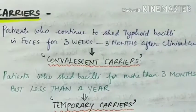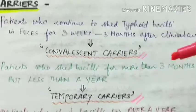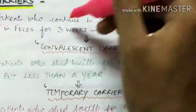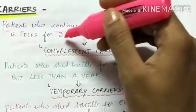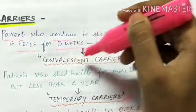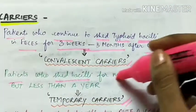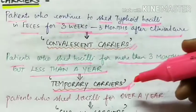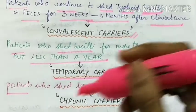Carriers are of three types: convalescent carriers, temporary carriers, and chronic carriers. Patients who continue to shed typhoid bacilli in their feces for three weeks to three months after clinical cure are called convalescent carriers. Patients who shed bacilli for more than three months but less than a year are temporary carriers, and those who shed bacilli for over a year are chronic carriers.